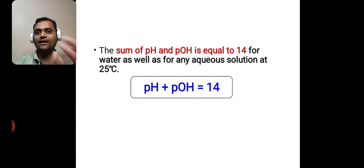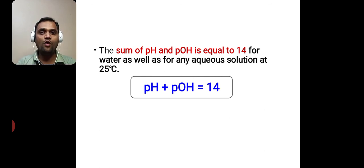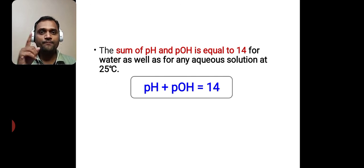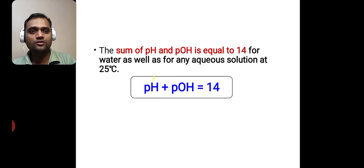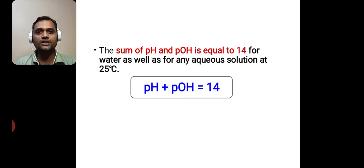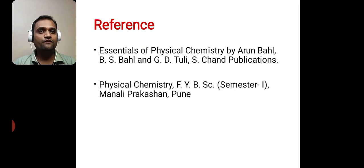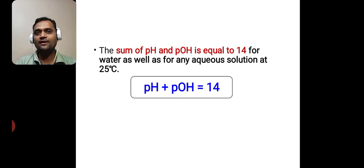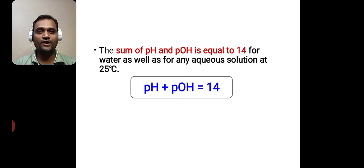An important relationship: the sum of pH and pOH is equal to 14 for water as well as for any aqueous solution at 25°C. So pH + pOH = 14. If you know the value of pH, you can determine pOH from this equation, and vice versa. We must remember that pH + pOH = 14. This is all about the pH scale — a simple but interesting topic. Thank you.